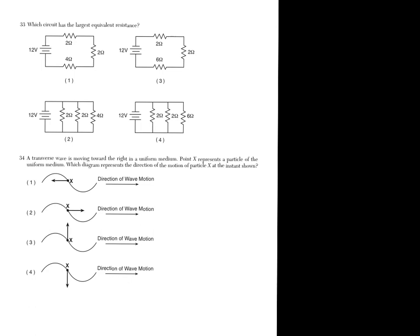Number 33. Which circuit has the largest equivalent resistance? So, between series and parallel, you're going to pick a series circuit, because parallel circuits reduce resistance. So, we're looking at choice 1 and 3. And, the winner here is choice 3 because you add them all up. This comes out to 10 ohms. This one comes out to 8 ohms.